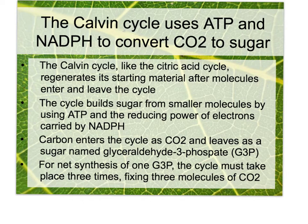To do this, we must run this cycle three times, and we need three molecules of CO2 to make one G3P. There are only three carbons in there. To make an entire glucose molecule, you'll need to do this process six times. So you might want to remember those numbers.